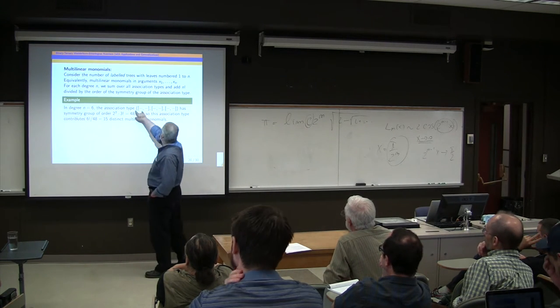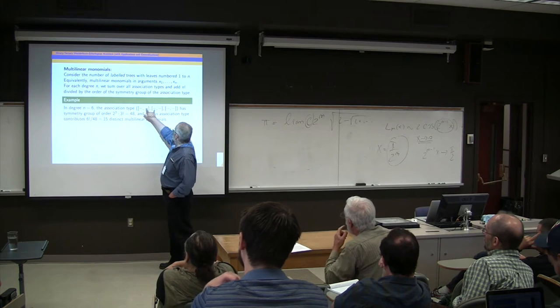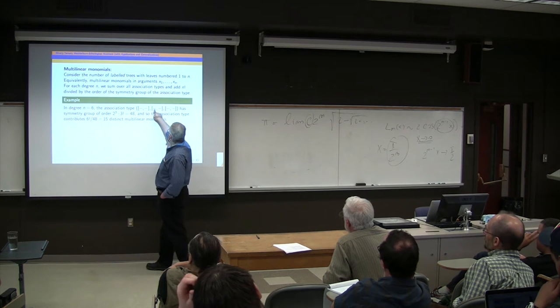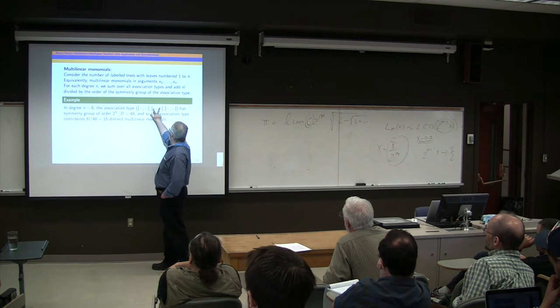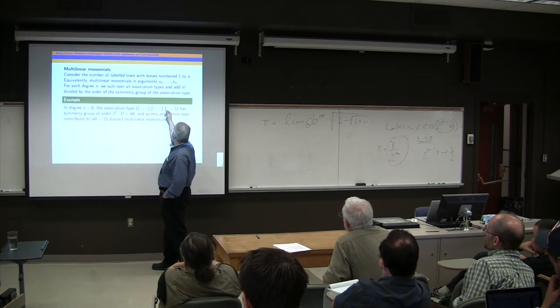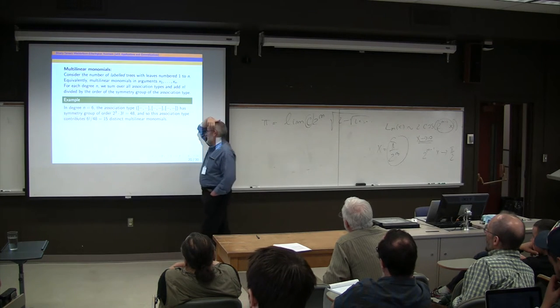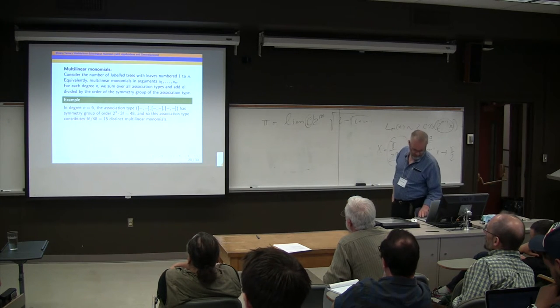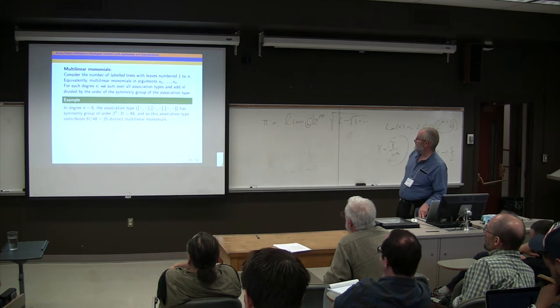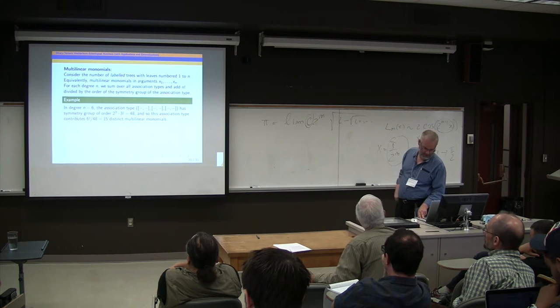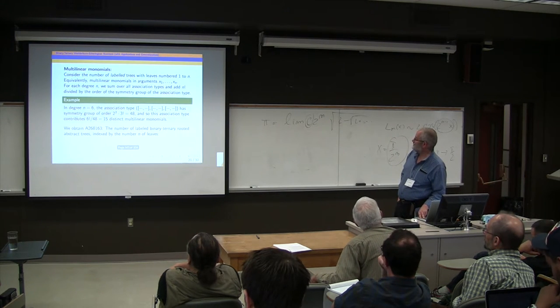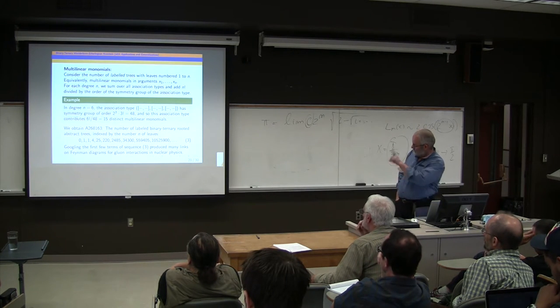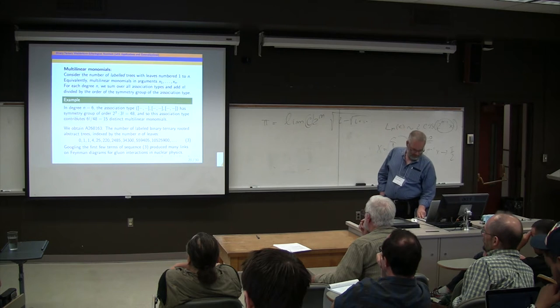Right, here's degree n equals six. You've got a ternary operation, and each argument is a binary operation. So when you plug in x1 to x6 here, you can switch those two, and those two, and those two, and you can permute those three factors. So you divide six factorial by two cubed times three factorial, and you get only fifteen distinct multilinear monomials for that association type, rather than 720. And you get these numbers, and this is the sequence that produced the Feynman diagrams.